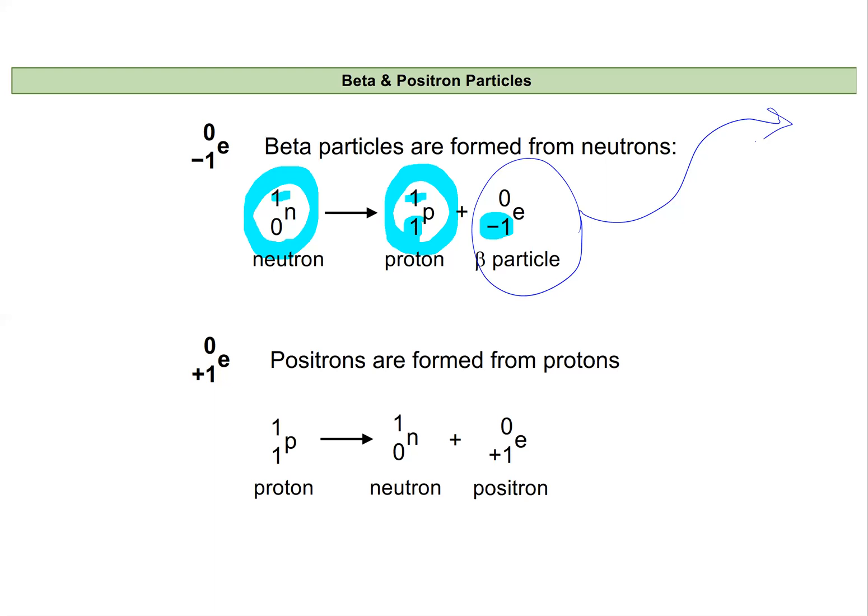Positrons are formed kind of from the opposite situation where a proton becomes a neutron within the nucleus. And so it's like this positive charge and this mass of one separate. And so we have the mass as a neutron and the charge as our positron. And then this small mass positively charged particle is emitted from the nucleus as it decays.